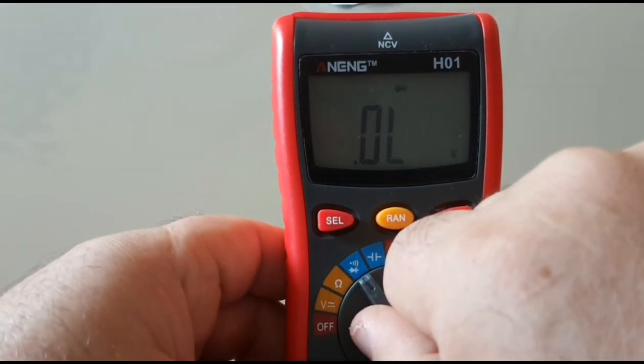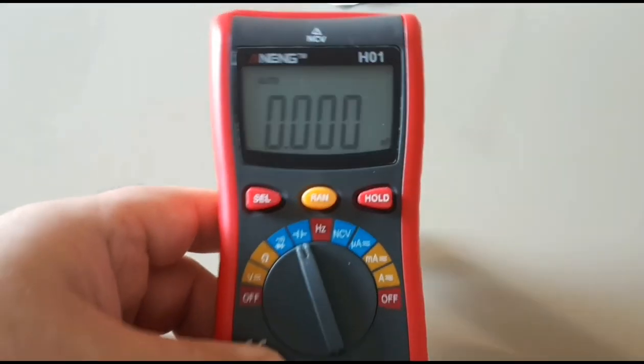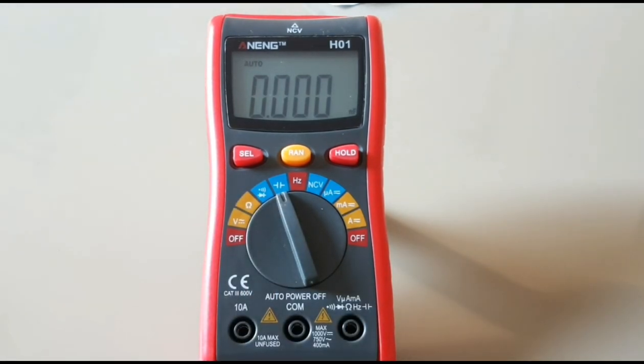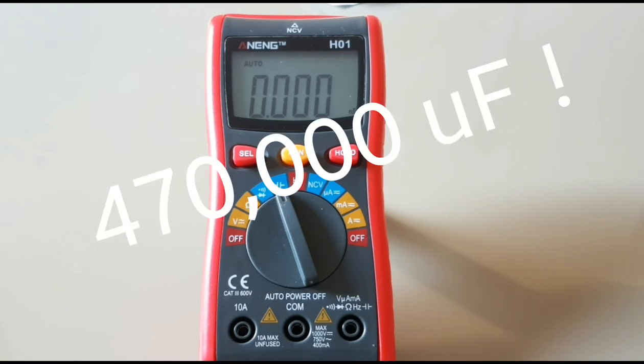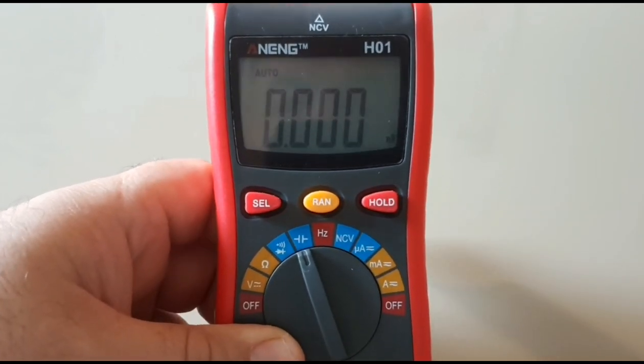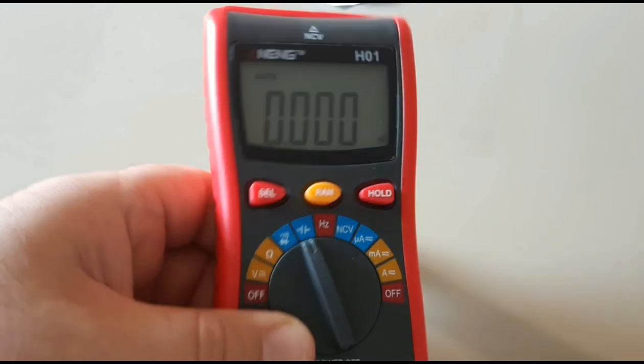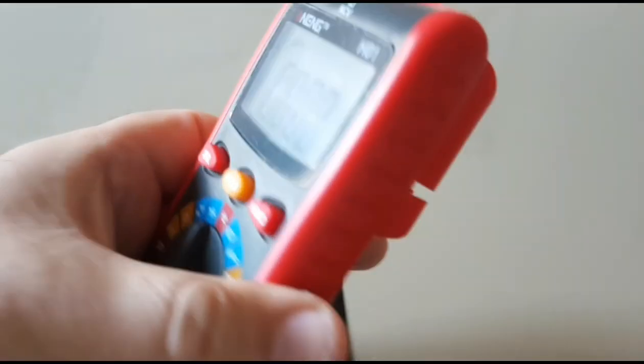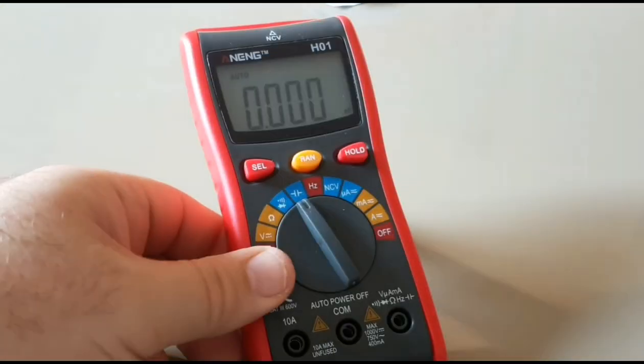Getting back to the meter itself, going up a notch we have the capacitance range, and this is where it really bites the dust. If you remember my last review, we looked at the Win Apex ET8101, that thing had a massive range. It was able to successfully test a 47 millifarad capacitor, that's 47,000 microfarad. The Anang H01 only goes up to 400 microfarad. What utter crap.